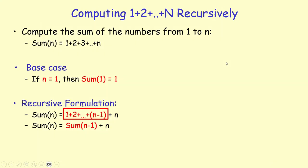Let's look at our first problem: computing the summation of numbers from 1 to n recursively. Iteratively, you can simply write a loop to compute the sum. But we want to implement a recursive function 'sum' that takes n and computes 1 + 2 + 3 + ... + n. The base case is if n equals 1, then the sum from 1 to 1 is 1 — we don't have to divide further. This is our stopping condition.